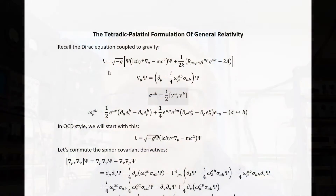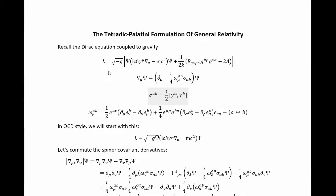So here follows the math section. In my video titled 'Sticking Spinors in General Relativity,' the ultimate result we got was the generally covariant Dirac action plus the kinetic term for the gravitational field — the Einstein-Hilbert action. Our goal is to derive the Tetradic-Palatini formulation of this Einstein-Hilbert action in a particularly instructive way.